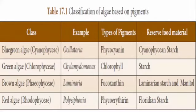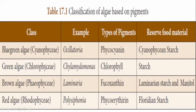Next we learn about the classification of algae based on pigments. Pigments means color. There are four classes of algae: blue-green algae, green algae, brown algae, and red algae. These algae are classified based on their color. Let's learn about each one by one.